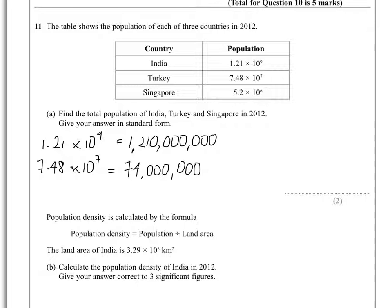And the final one is Singapore which is 5.2 times 10 to the 6. If you imagine the decimal moving 6 places to the right from the 5, that gives us 5,200,000.